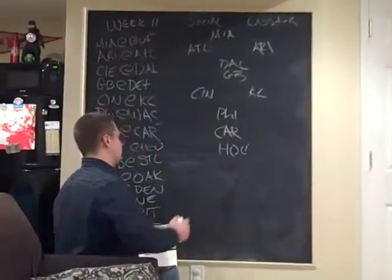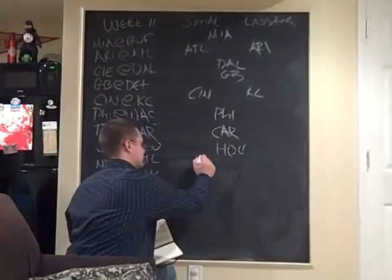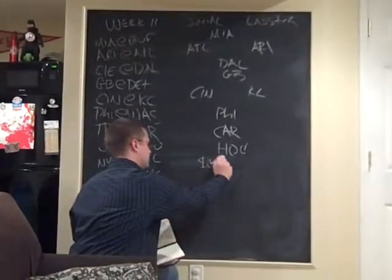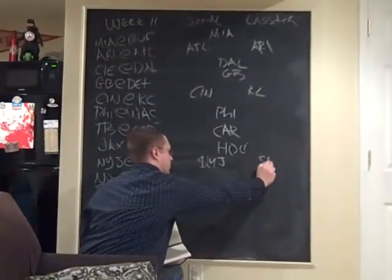The Jets and St. Louis were split. Social likes the Jets. And the Lassiters like the Rams.